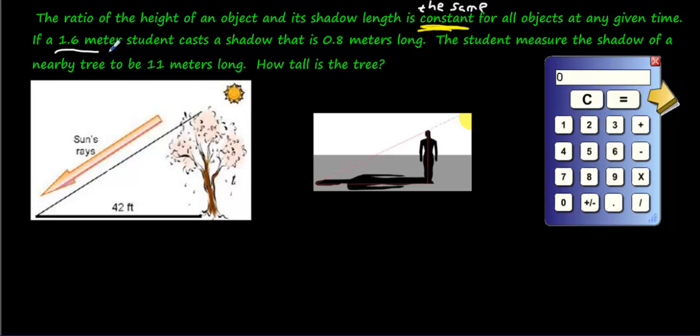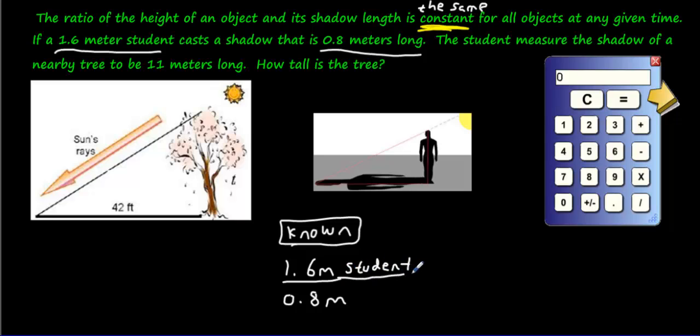If a 1.6 meter student, so this guy here, I'm assuming he's the student, he's 1.6 meters tall, casts a shadow that is 0.8 meters long. Remember when we have to write our known first? Don't we know that? Don't we have this information as a known? We have a 1.6 meter student and his shadow is 0.8 meters long. So let's write meter student, and 0.8 meter shadow. So we have students versus shadows.